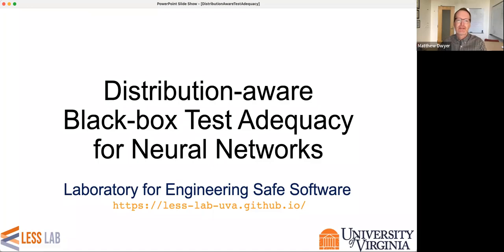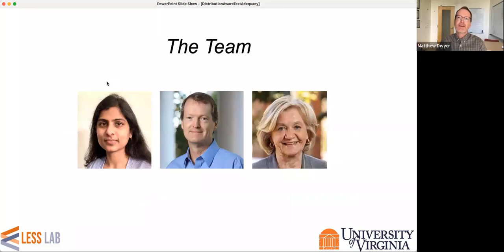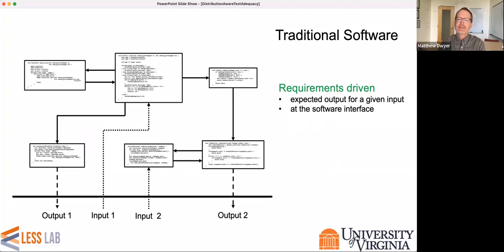My goal today is simply to explain this title: Distribution Aware Black Box Test Adequacy for Neural Networks. The work is being done, led by Swarupa Dola, who's a PhD student at our university, co-supervised by myself and my colleague Mary Lou Sofa. I want to start with a little bit of background on traditional software and how we test it and think about testing such systems.